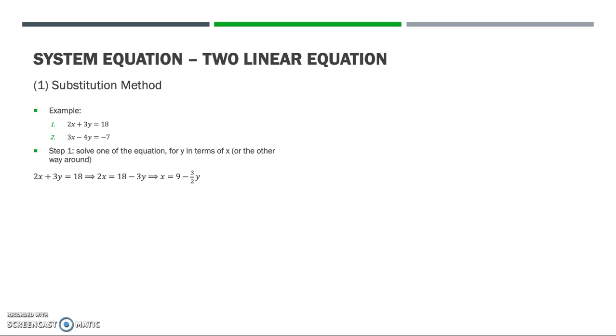Here I try to solve the x in terms of y. Taking from equation 1, by rearranging, I get x as a function of y, where x equals 9 minus 3 over 2y.